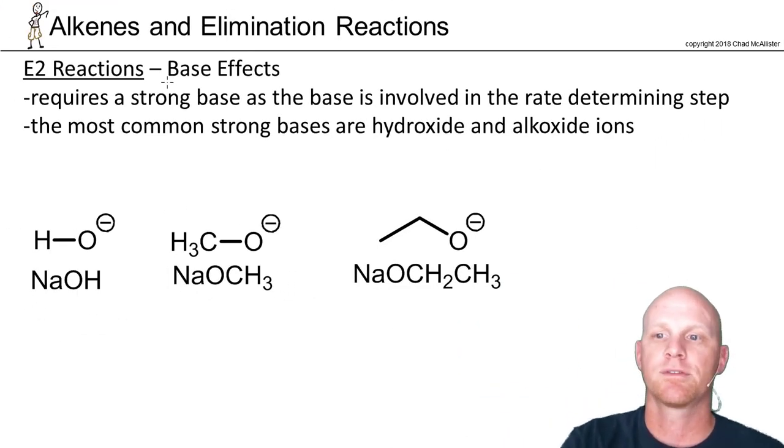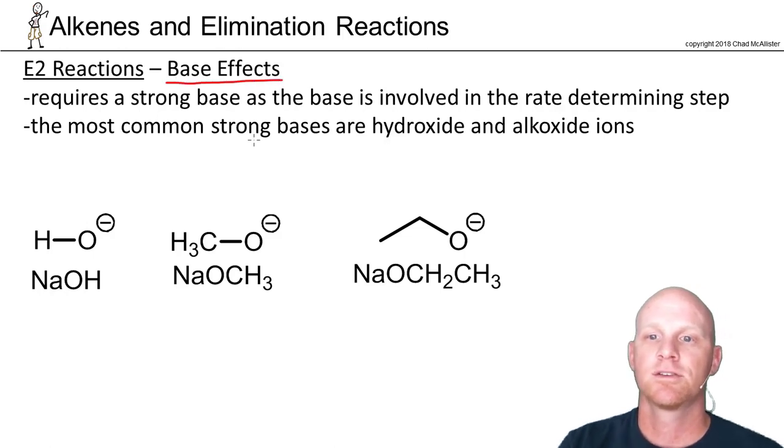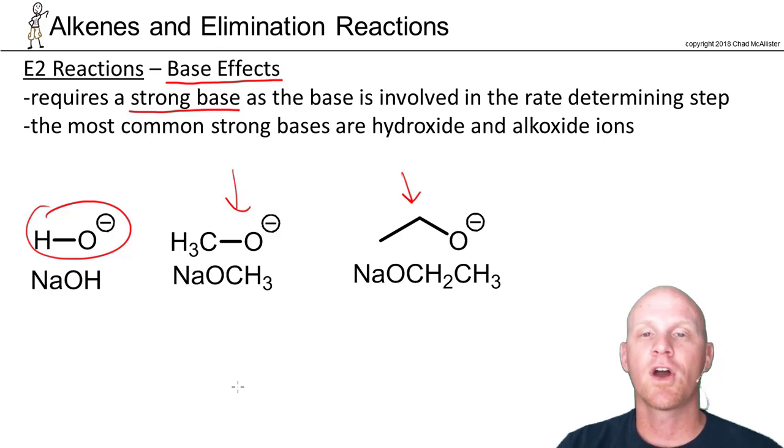So the first thing we want to take a closer look at with regard to E2 reactions are the base effects. Just like what we did with SN2 reactions, we looked at the nucleophile effects. In the case of SN2, we saw that because the nucleophile is involved in the rate determining step, we needed a strong nucleophile. Well similarly here for E2, because the base is involved in the rate determining step, we need a strong base. And your typical strong bases are either going to be hydroxide or what we're going to call alkoxide ions. So alkoxide ions are the conjugate bases of alcohols. They're comparable in strength to hydroxide. And oftentimes we'll use the sodium or potassium salts of either hydroxide or these alkoxides. So here we've got sodium hydroxide, sodium methoxide, sodium ethoxide, and they're definitely your classic E2 strong bases. Not every strong base has a negative charge on oxygen or is either hydroxide or alkoxide, as we'll see. But the most common ones we'll use in this chapter for sure are.